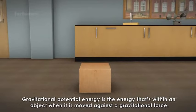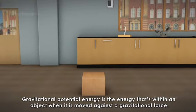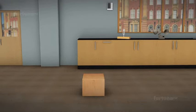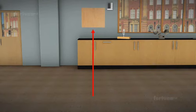Gravitational Potential Energy is the energy that's within an object when it is moved against a gravitational force. If an object is raised above the ground, it will acquire potential energy. The object's gravitational potential energy will depend on its weight as well as how high it is above a surface.